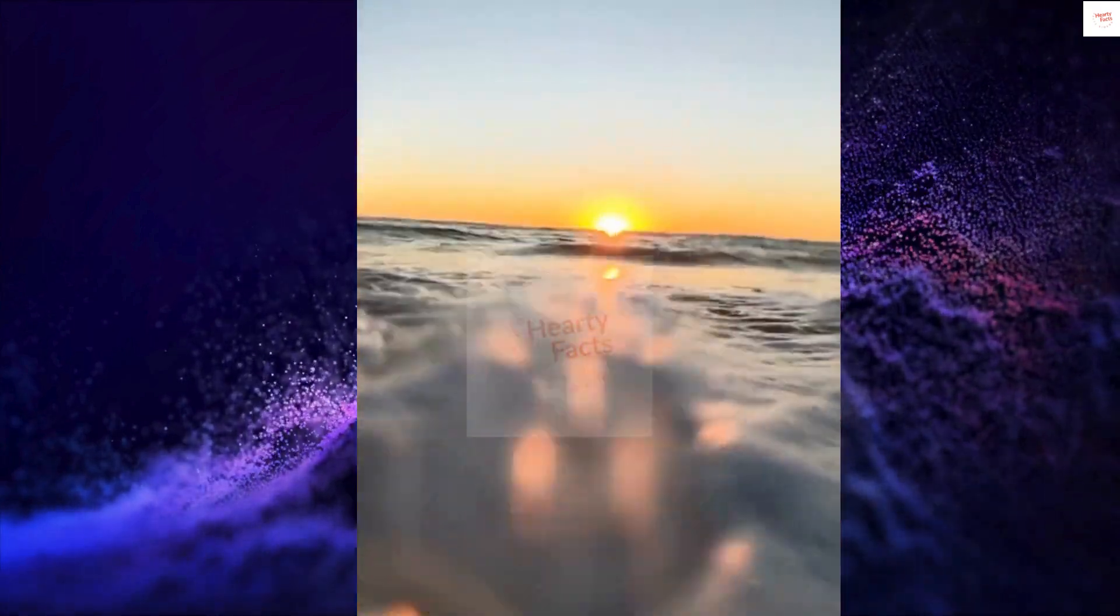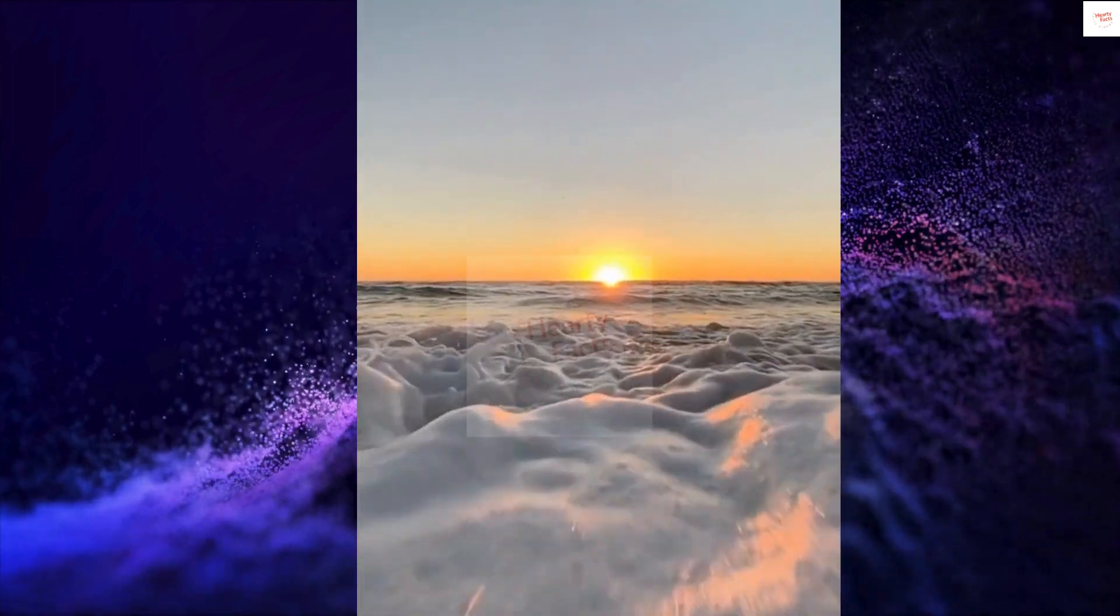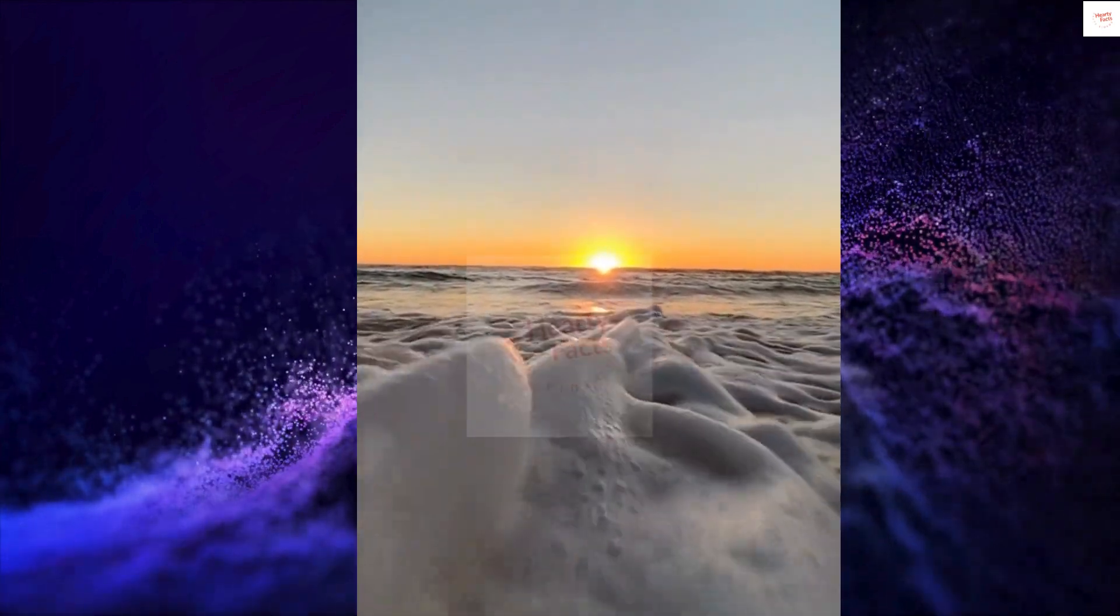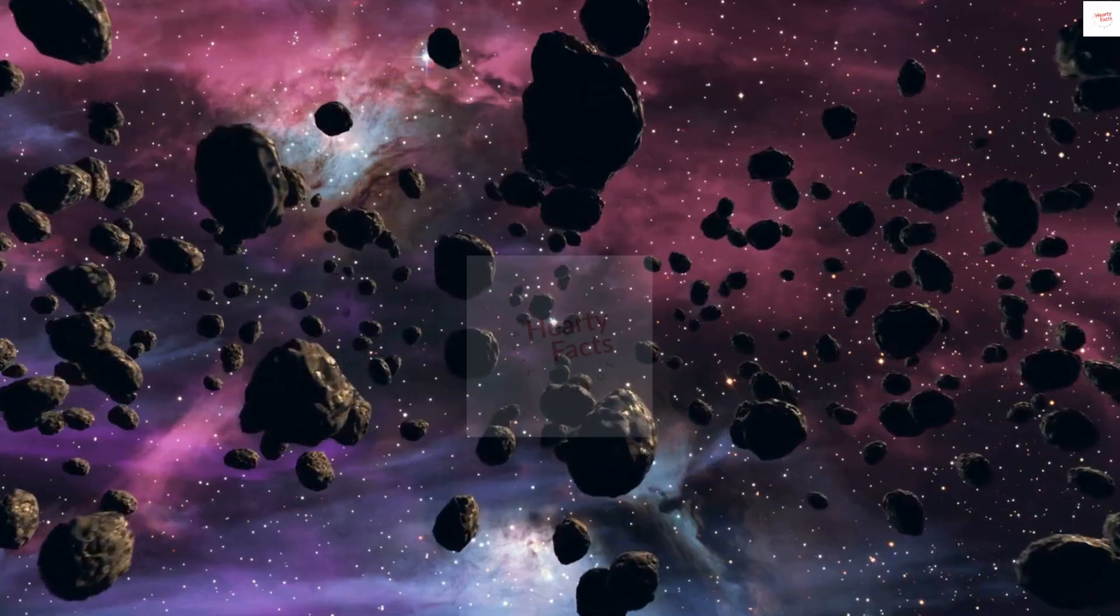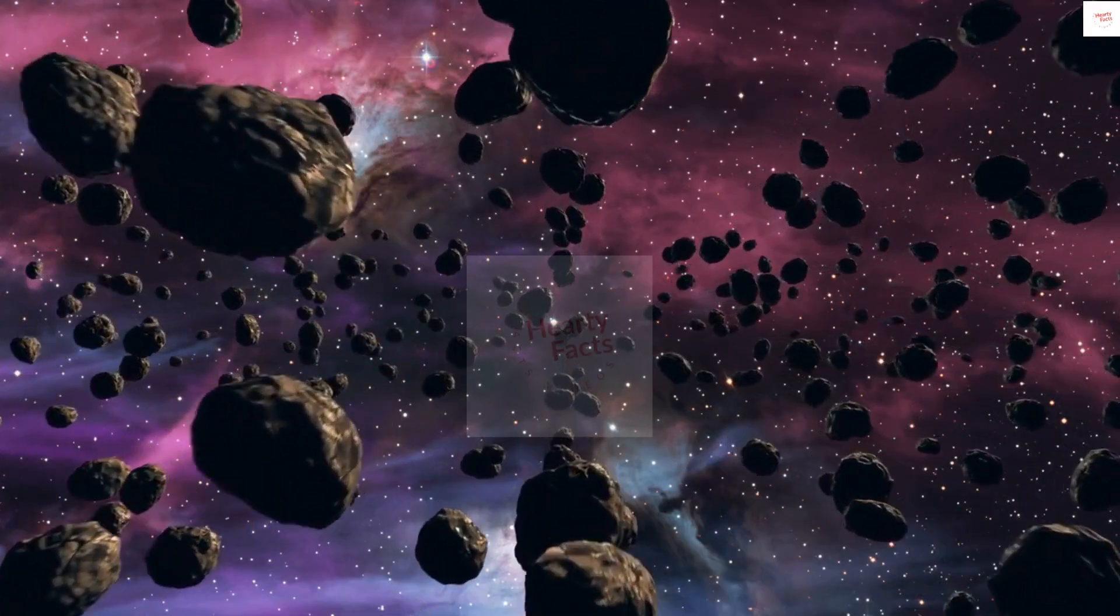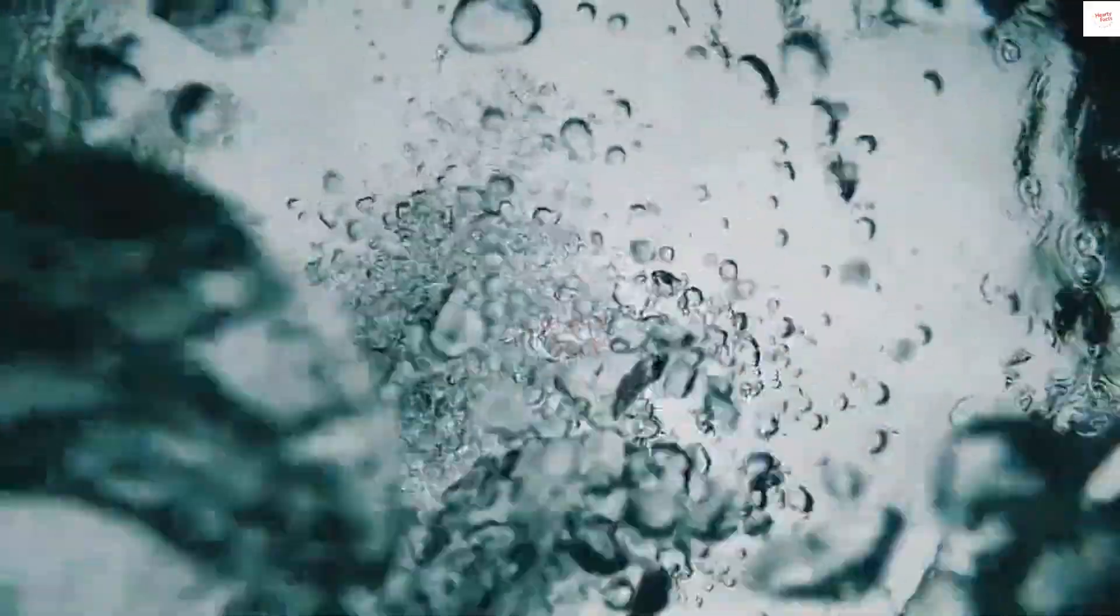You see, our planet's water was not born here. Instead, it was delivered to us by ancient cosmic travelers, comets and asteroids. These celestial bodies formed in the farthest reaches of the cosmos, brought with them the gift of water. As they collided with our young planet, they released their precious cargo, giving birth to our oceans, seas, and rivers.